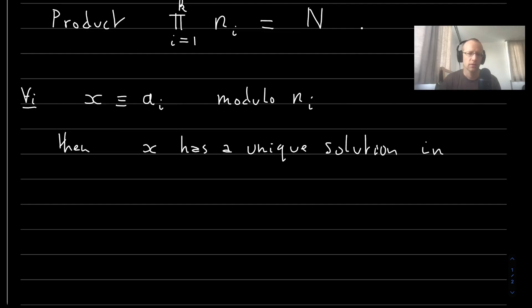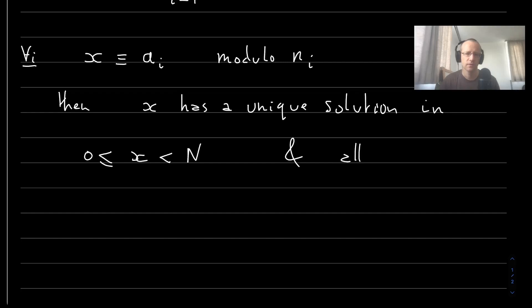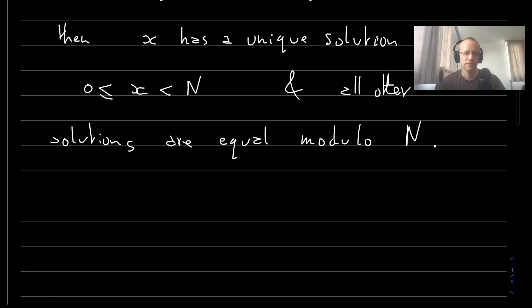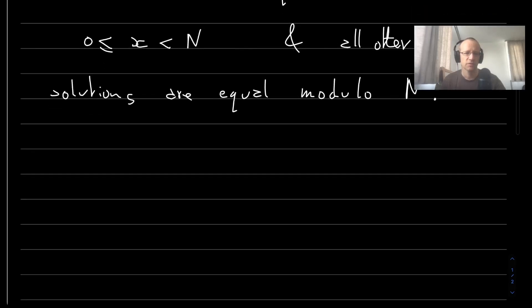In the interval 0 up to n, and all other solutions. For instance, if a number equals something modulo 3 and something else modulo 5, there's a unique solution modulo 15 between 0 and 14.